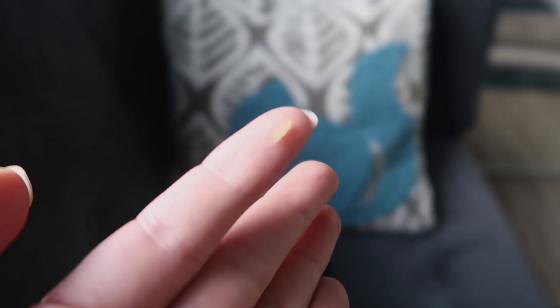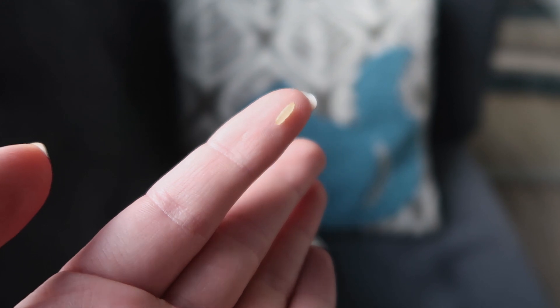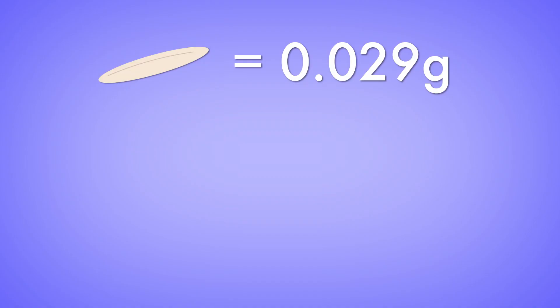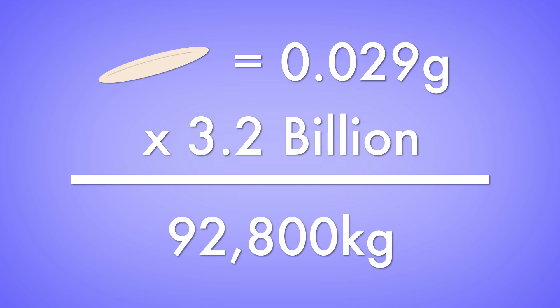I wanted to do a demonstration of this. I thought, I'm going to get 3.2 billion grains of rice — that'll show people how big 3.2 billion is. But when I did the math, 3.2 billion grains of rice would weigh about 93,000 kilograms. That's 205,000 pounds — like 17 elephants worth of rice — and my apartment is not big enough for that.